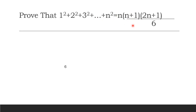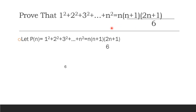Now let's do one example step by step. Let P of N be: 1 squared plus 2 squared plus 3 squared plus ... plus N squared equals N times N plus 1 times 2N plus 1, divided by 6.